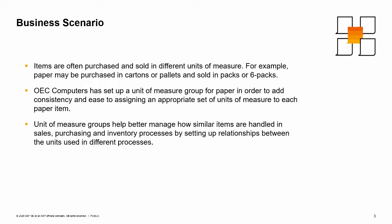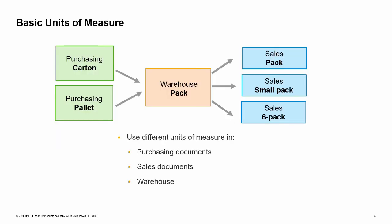Unit of measure groups help better manage how similar items are handled in sales, purchasing, and inventory processes by setting up relationships between the units used in different processes. Typically in business, an item may be sold in different types of packaging than how it is purchased. In the graphic, we see an example for paper.